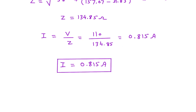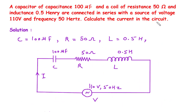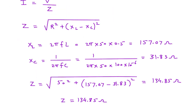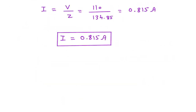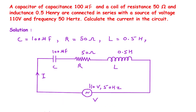So what we had to find in this question was the current in the circuit, and this is the value: I = 0.815 A. If you find this video helpful, feel free to donate — the link is in the description below. Also feel free to like and subscribe to this channel. Thank you.